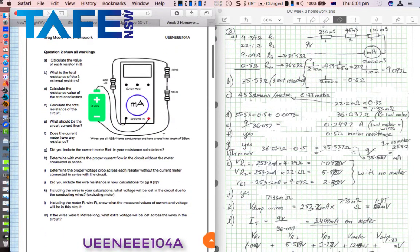Question 2 is quite different. Question 2 has to do with conductances. Instead of being given resistances in this circuit, we're given that the first one is 230 millisiemens, the second is 45 millisiemens, and the third is 110 millisiemens.